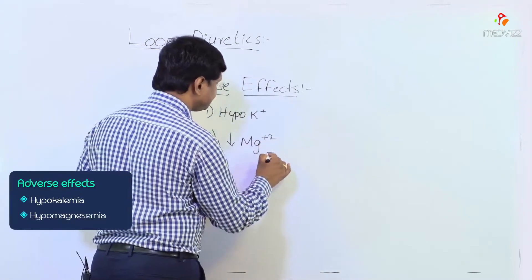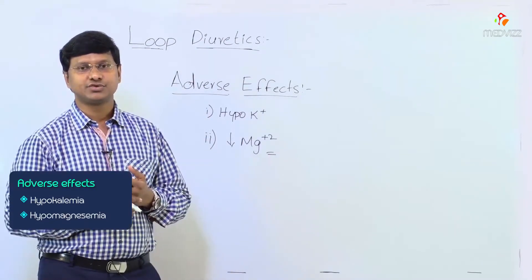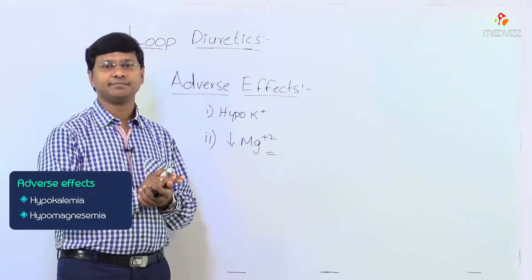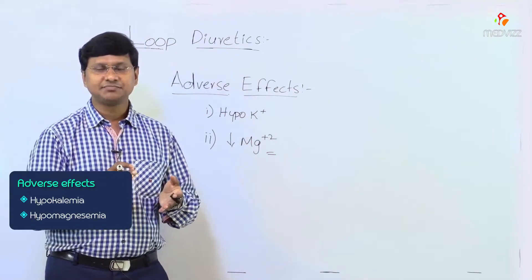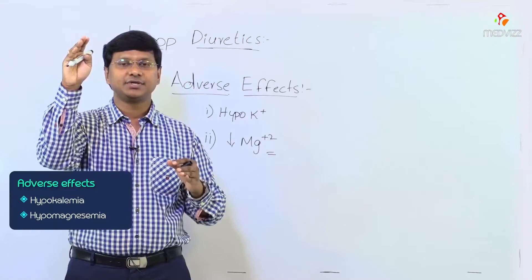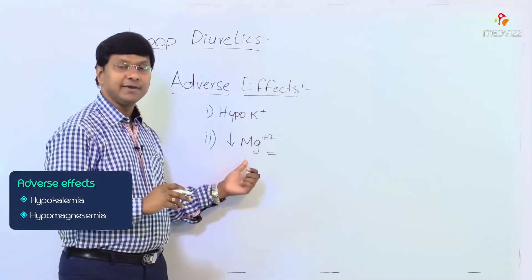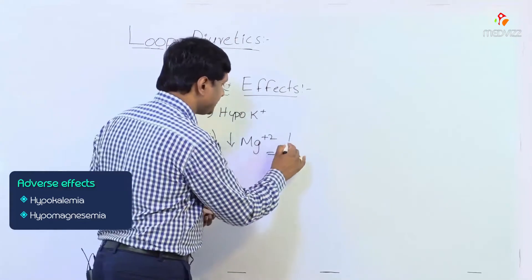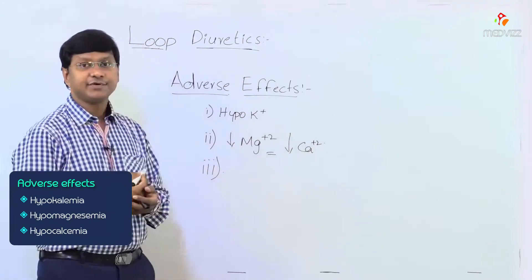These drugs also cause hypomagnesemia. Loop diuretics reduce the positivity at the level of the thick ascending limb of the loop of Henle, so magnesium — and also calcium — passes through into the distal tubules and gets excreted in the urine. This is responsible for hypomagnesemia as well as hypocalcemia.